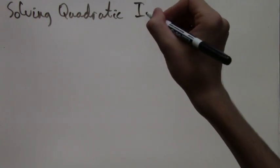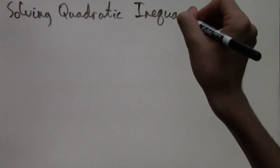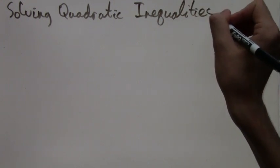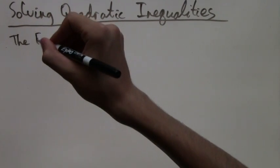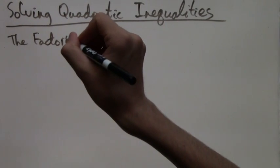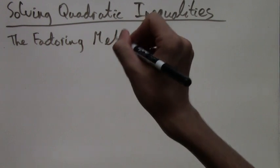As with quadratic equations, there are two ways of solving quadratic inequalities. There's the factoring method, and there's the quadratic formula. Now we're going to focus on the factoring method.